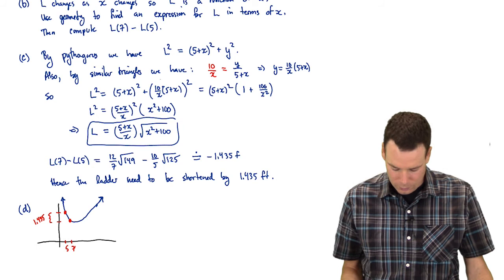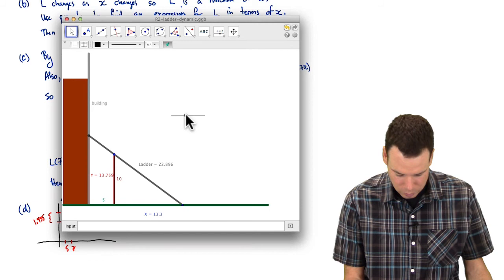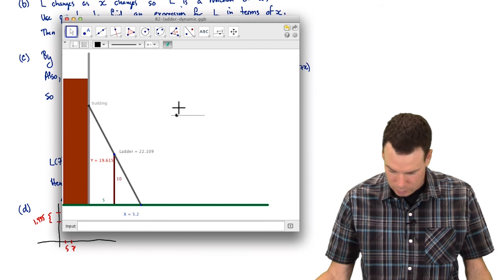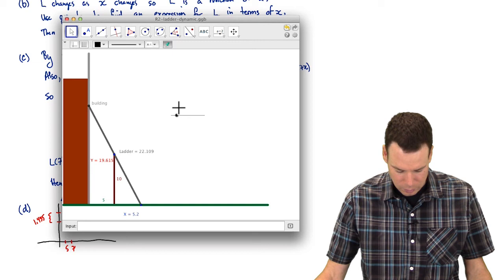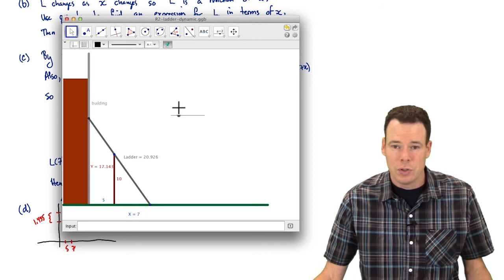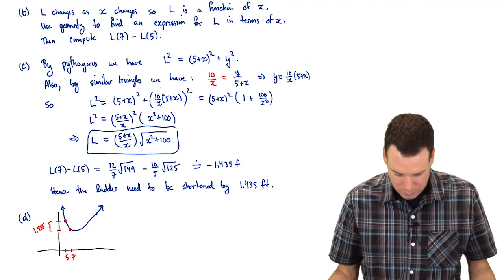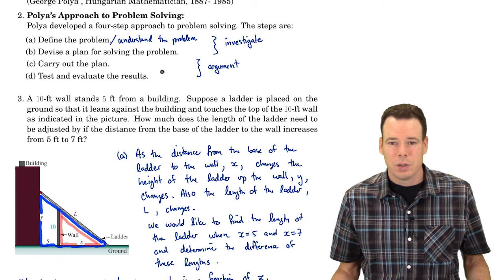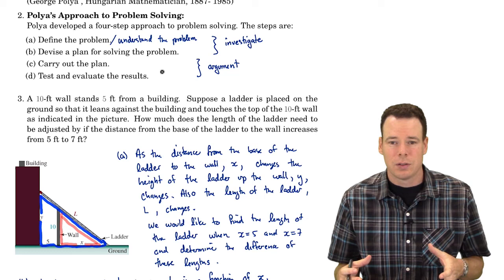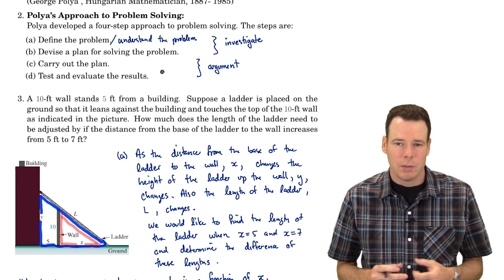If there's a dynamic construction available, you can also use that to test you're in the right ballpark. The length at X equals 5 is roughly 22.36 and the length at X equals 7 is 20.92, so the difference is roughly 1.4 — adding credibility that our answer is correct. In the testing and evaluation phase there's no one-size-fits-all approach; the point is to look at your answer and think: does it make sense, and is there a way to check whether I'm in the right ballpark?